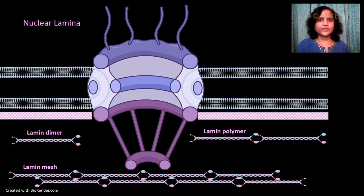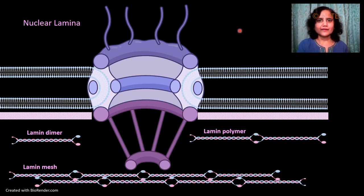The inner membrane is supported by the nuclear lamina, which lies below the inner nuclear envelope. It is a meshwork of intermediate filaments made up of lamin proteins. Here is a lamin dimer and a lamin polymer or filament. The lamin dimers associate in a head-to-tail fashion, and they are made up of lamin A and lamin B subunits. These filaments then associate with each other to form the network — the mesh — present below the inner membrane.